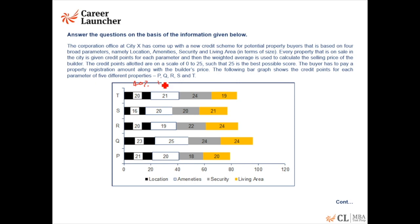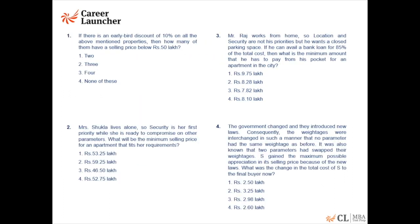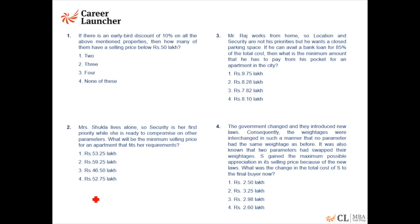The weights are 40%, 10%, 30%, and 20%. Question 1: if there's an early bird discount of 10% on all properties, how many have a selling price less than 50 lakhs? To get a selling price below 50 lakhs, the weighted average of points should be less than 20. But after a 10% discount, the weighted average should be less than 20 ÷ 0.9, which equals 22.22.